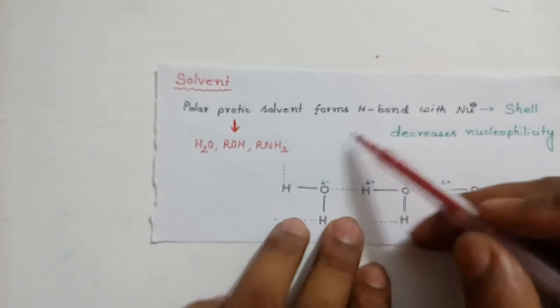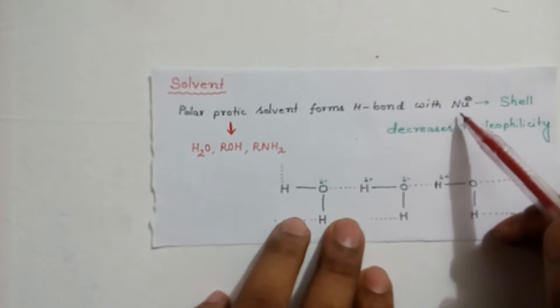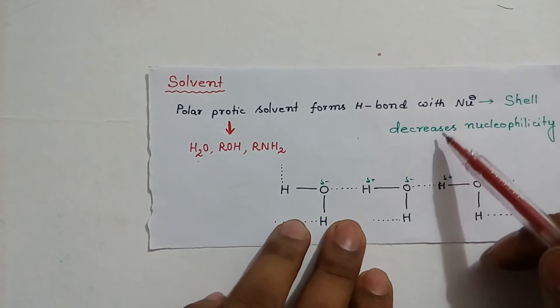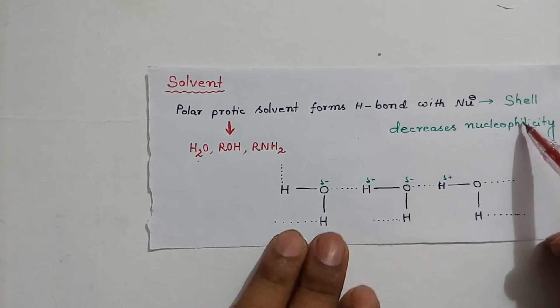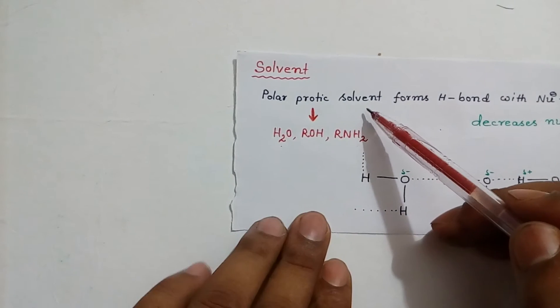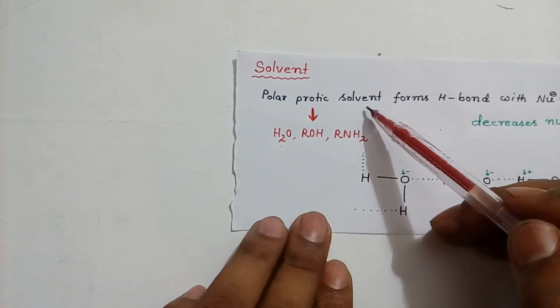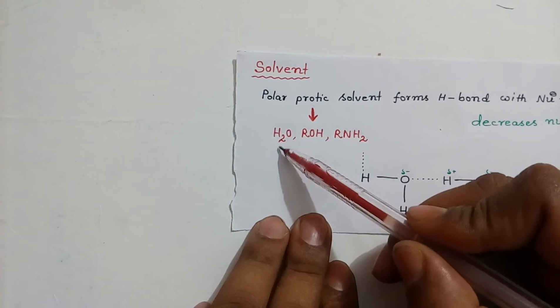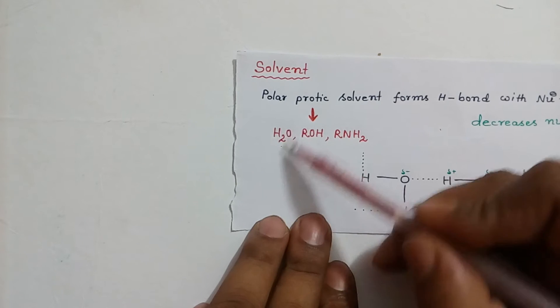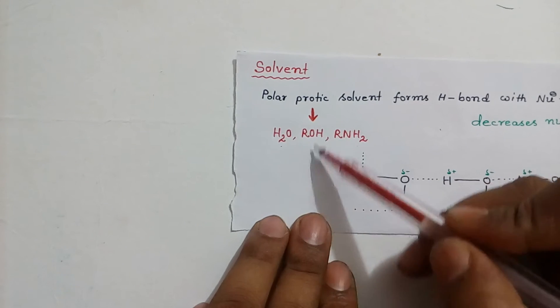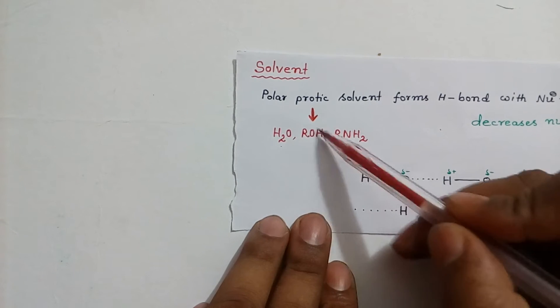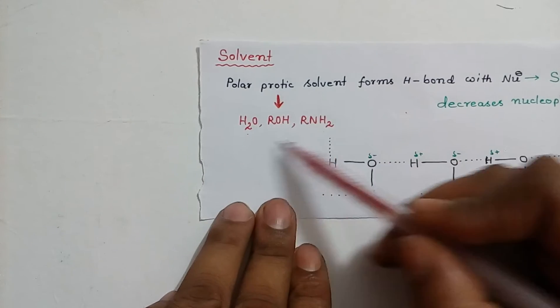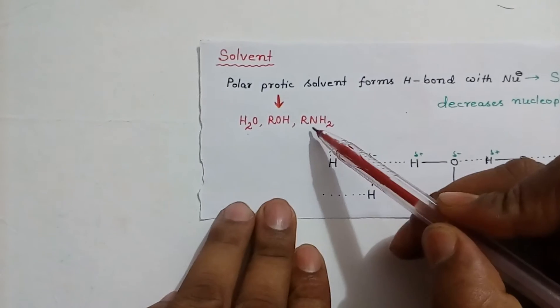Polar protic solvent forms hydrogen bond with nucleophile. Thus, it forms a sheath around it, and hence, it decreases its nucleophilicity. Polar protic solvents are those solvents which has replaceable hydrogen atom. From here, H+ can be knocked out, thus giving OH-. From here, H+ can be knocked out to give alkoxide ion. So, these are all polar protic solvents.